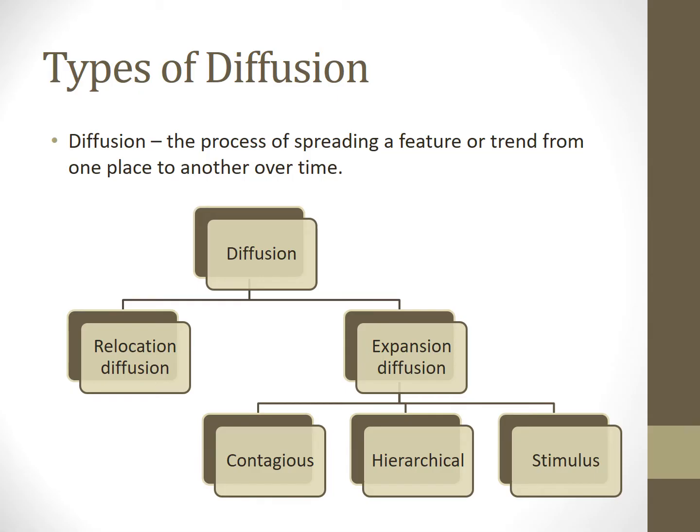We begin with diffusion, which is the process of spreading a feature or trend from one place to another over time. It has been estimated that no more than 10% of the cultural artifacts of any society are traceable to innovations created by its members, and that means that the other 90% come to the society through diffusion.